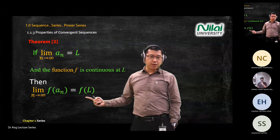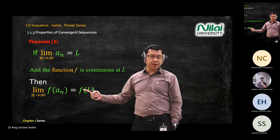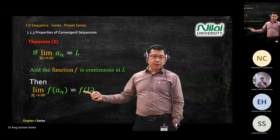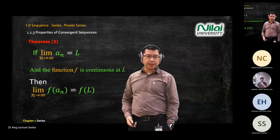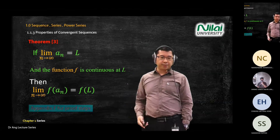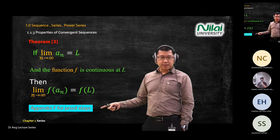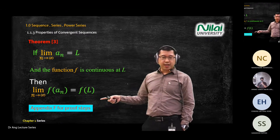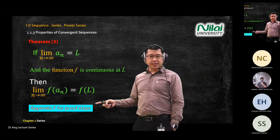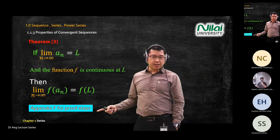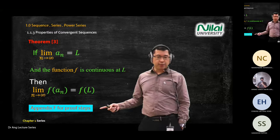If you get L, meaning it's convergent, you can write the mathematics equation: function of a_n equals function of L — meaning you can substitute the function with the L value. I will include the appendix in Moodle so you can see how this theorem is proven. I'm going to upload the proving steps from appendix F to Moodle later.